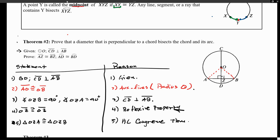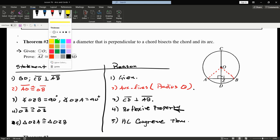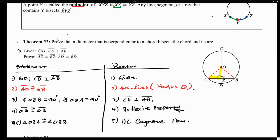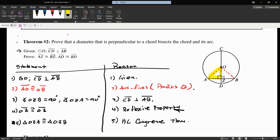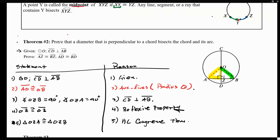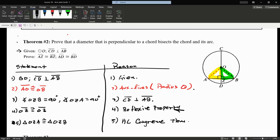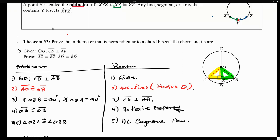Since we know those two triangles are congruent to each other, notice that AZ corresponds to ZB. Therefore, AZ is congruent to ZB, and the reason is CPCTC — they are corresponding sides. We have now shown the first statement we wanted to prove: AZ is congruent to ZB.